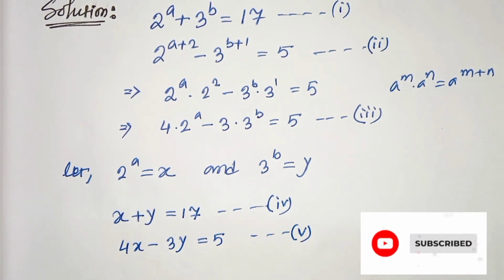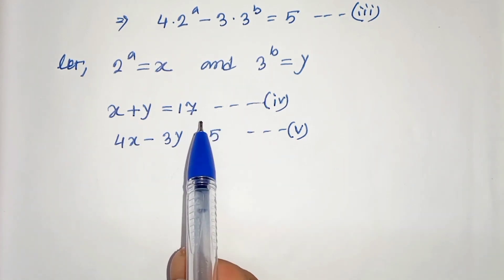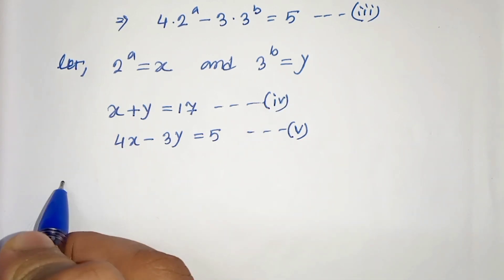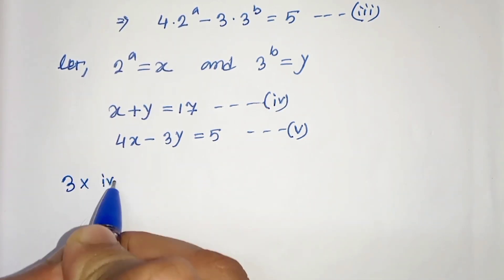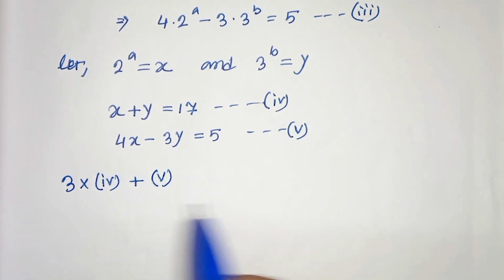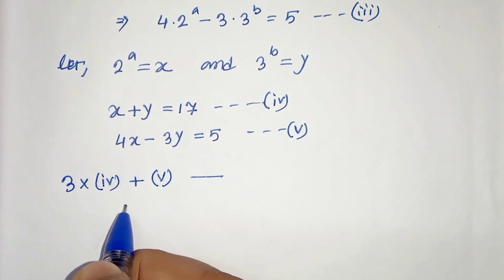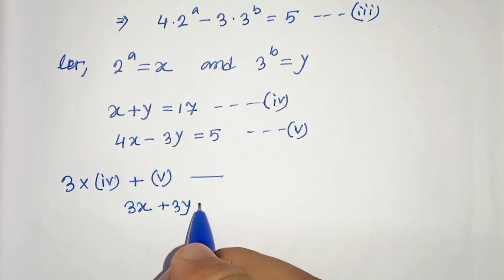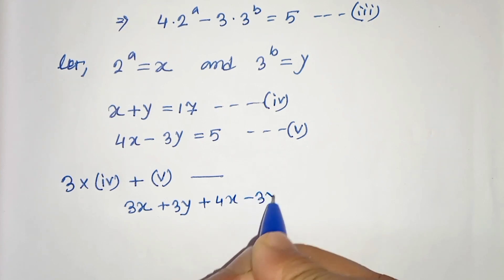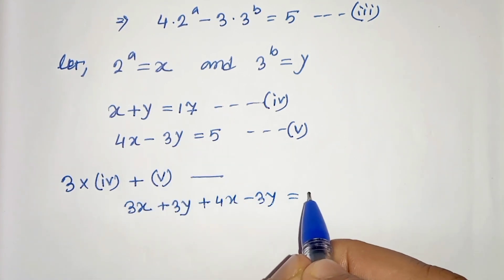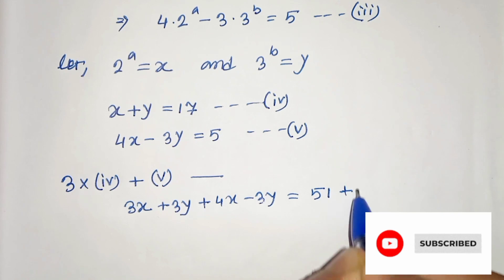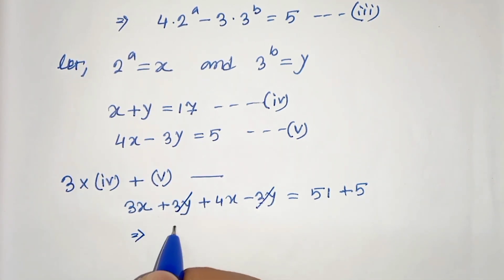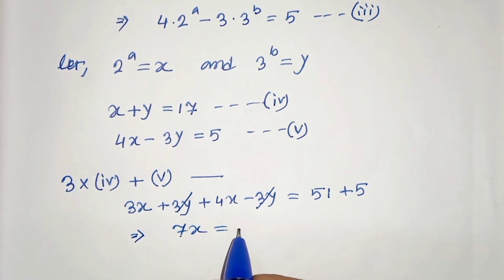Now let's solve these two equations. To solve this, let's multiply 3 with equation 4 and add these two equations. So 3 times equation 4 plus equation 5: we get 3x plus 3y plus 4x minus 3y, and 3 times 17 is 51 plus 5. The plus 3y and minus 3y cancel out, so we get 3x plus 4x which is 7x, and 51 plus 5 is 56.